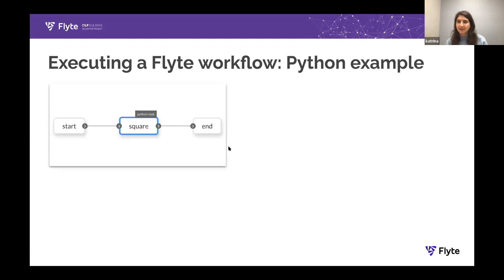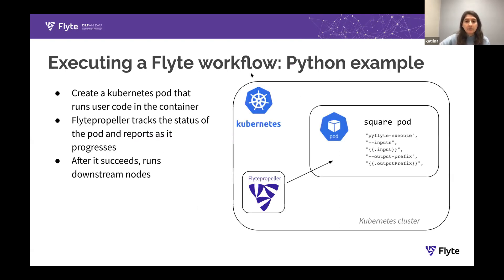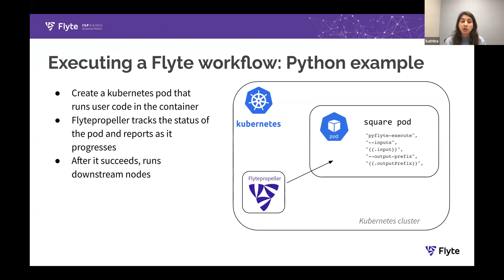Let's review our square example. It's simple, but sufficient to walk through what happens for a Python task. As we're progressing through that square task, Flight Propeller will create a Kubernetes pod that runs that user code from the square task definition inside a container — the one that was pre-built at serialization and registration time. Flight Propeller will periodically monitor the status of that pod and report as it progresses and changes phase. After it produces an output, Flight Propeller will send all that data back to Flight Admin, capturing it so that any downstream nodes that consume the outputs of that square task can use them as inputs.